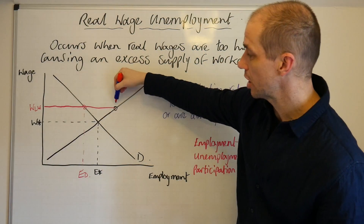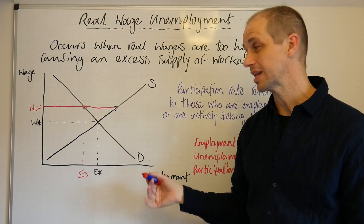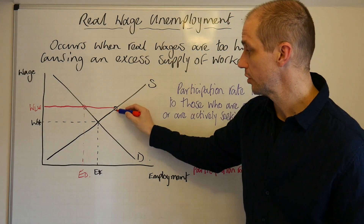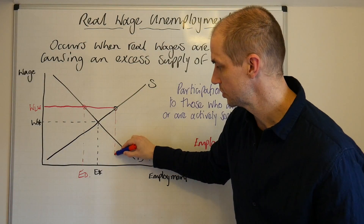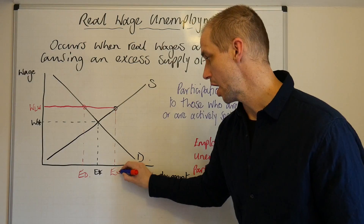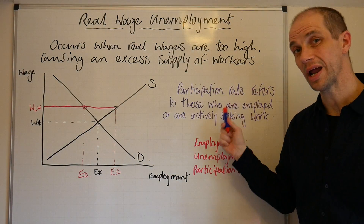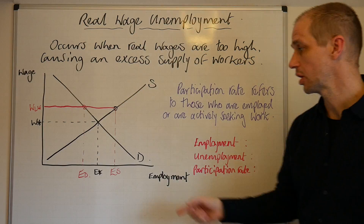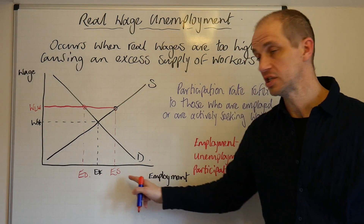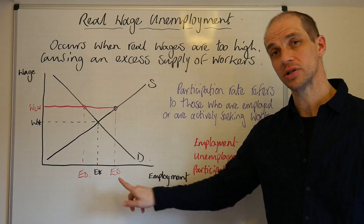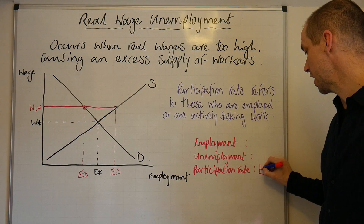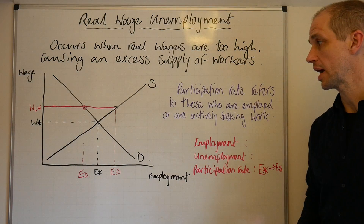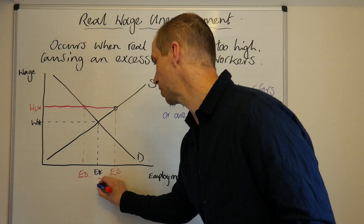Meanwhile, a great deal of workers are attracted and incentivised to participate in this labour market, so the participation rate will rise to ES. The participation rate refers to those who are employed or are actively seeking work, and we can see it rises from E* right through to ES.